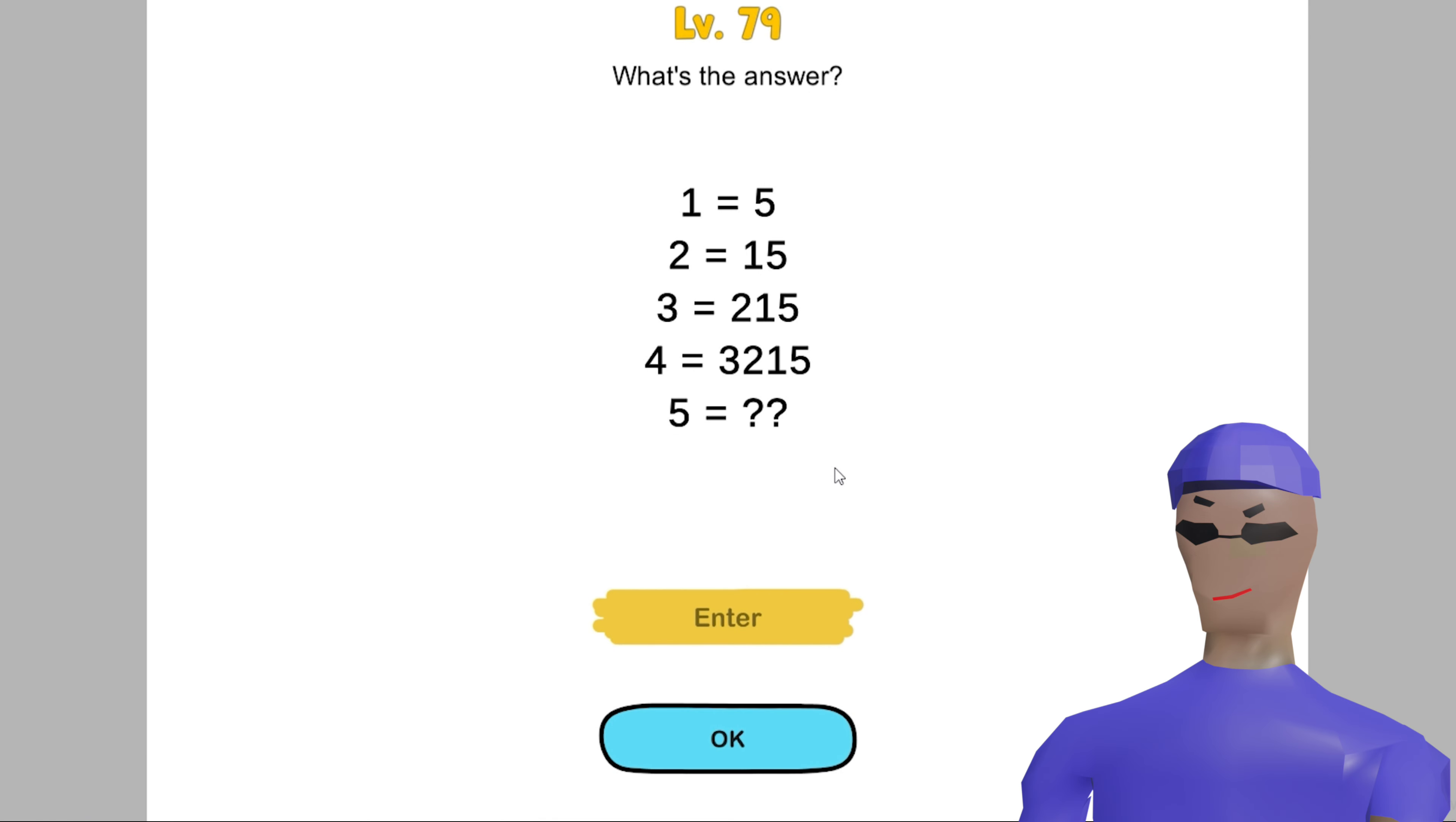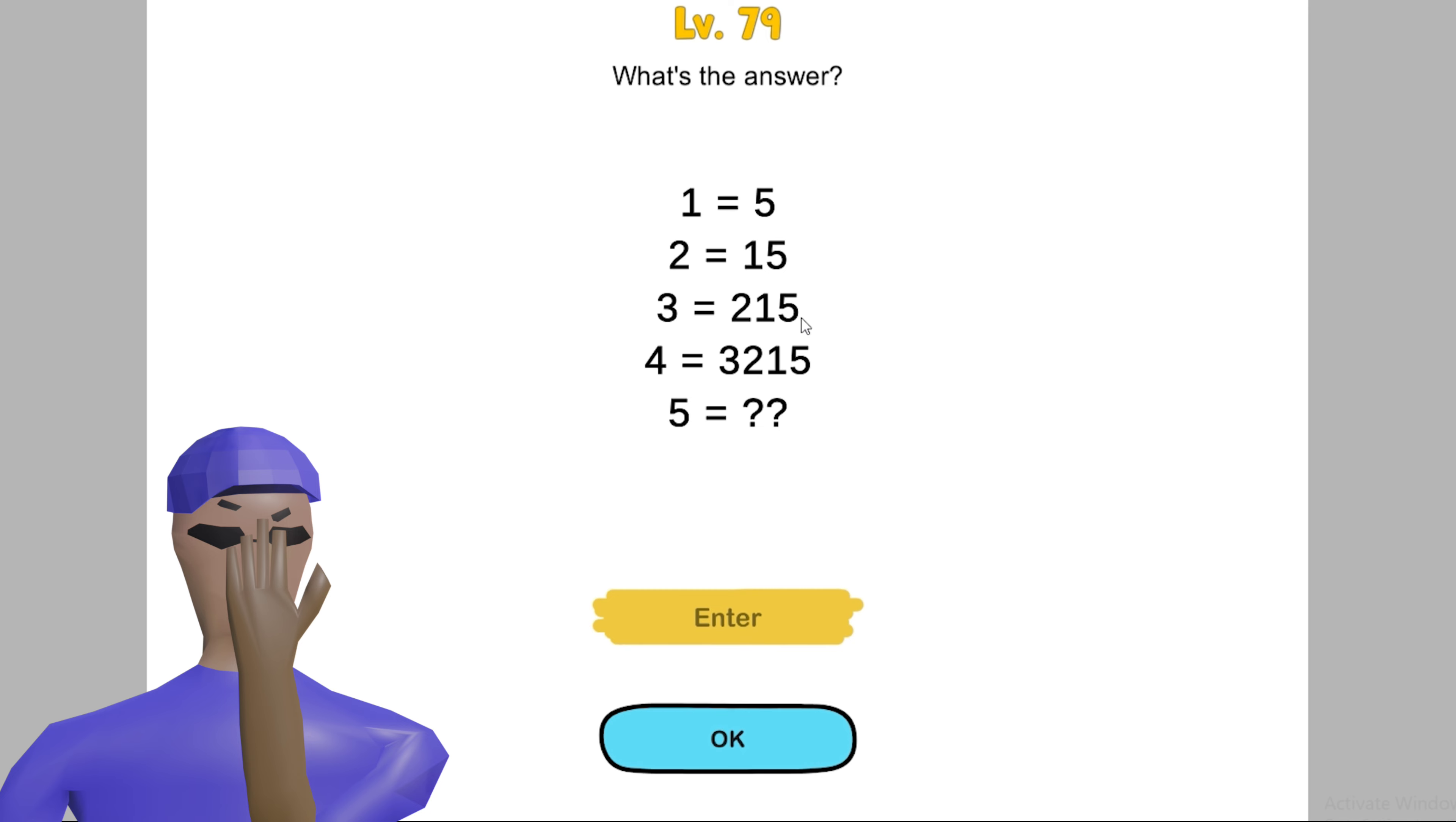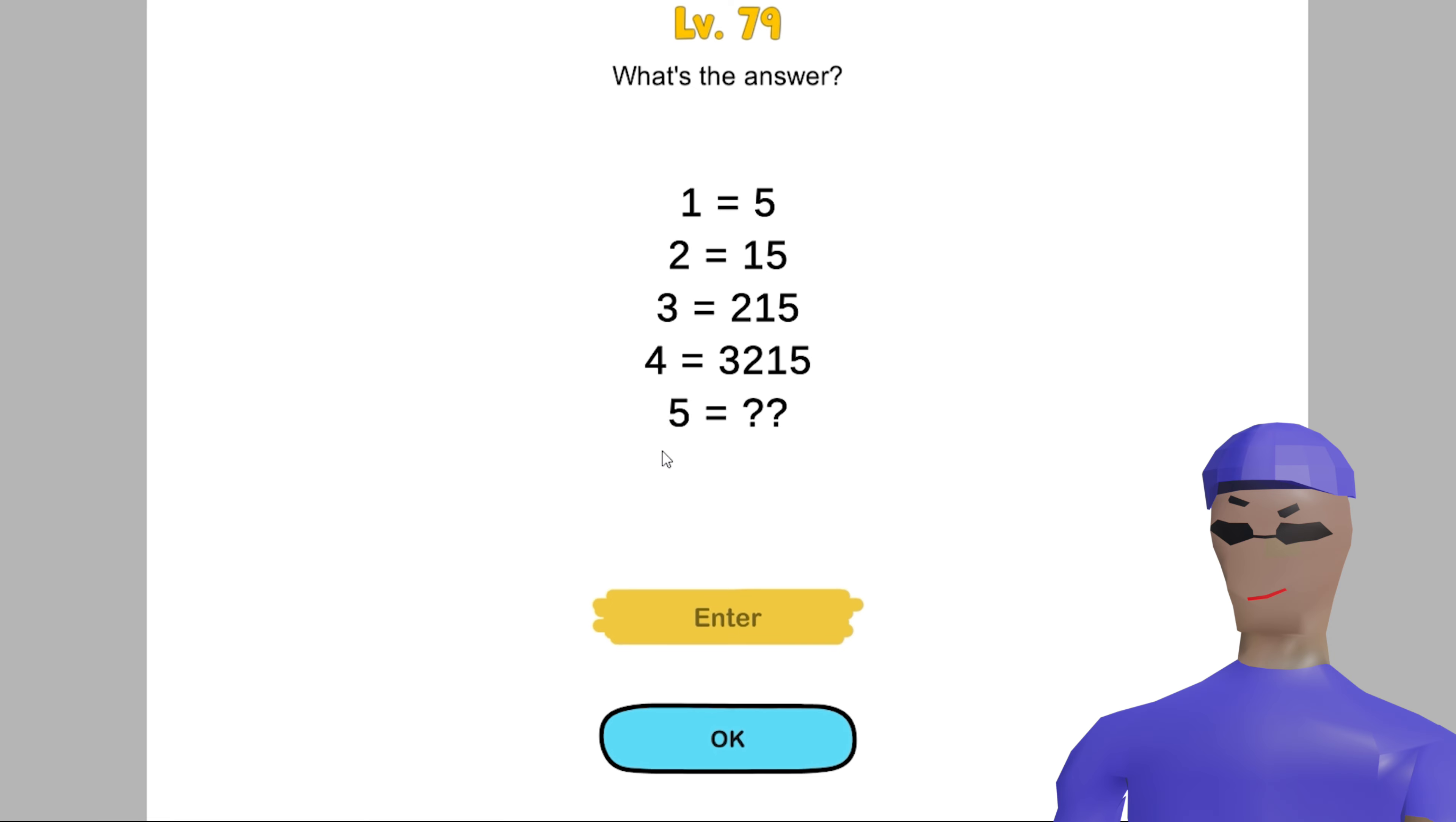Do you have a brain? Are you smart? Because dumb people are not allowed to watch this video. And if you are still watching, then let's begin. First question: 1 equals 5, 2 equals 15, 3 equals 215, 4 equals 3215. It means 5 equals what?